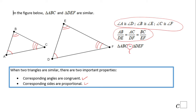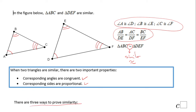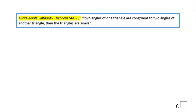This is the sign for similar triangles. The question is: how can we prove similarity? As I said, there are three ways to prove similarity. The first way is what we call the Angle-Angle similarity theorem — AA for short. This says if two angles of one triangle are congruent to two angles of another triangle, then the triangles are similar.